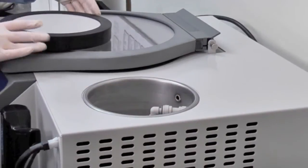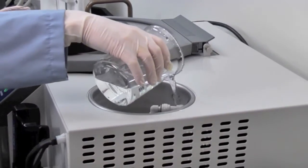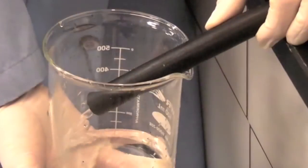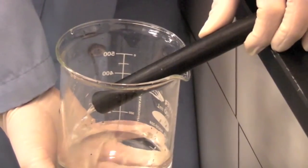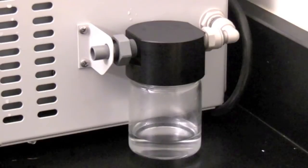Defrost and drain the cold trap, making sure to close the port after draining. Check the vacuum pump exhaust trap and empty if necessary.